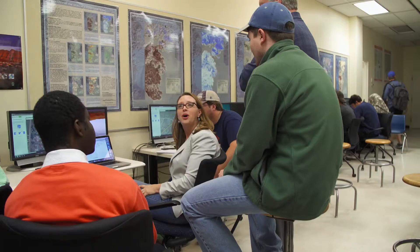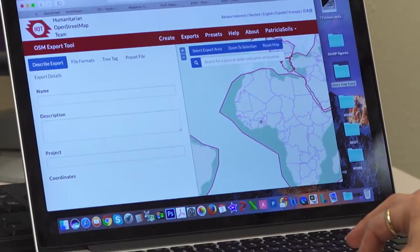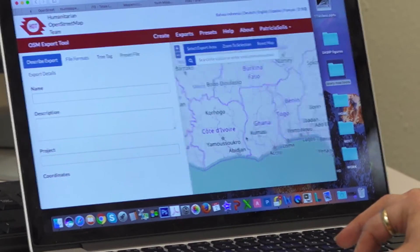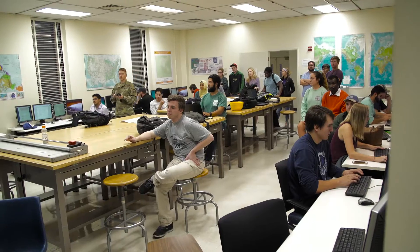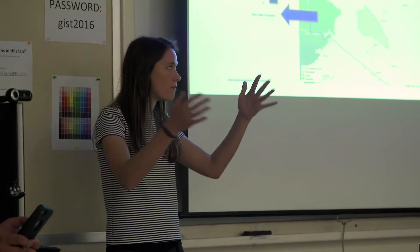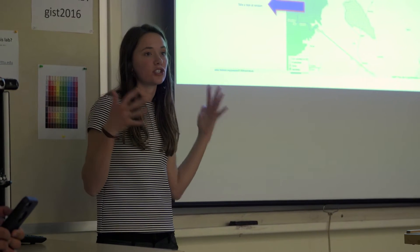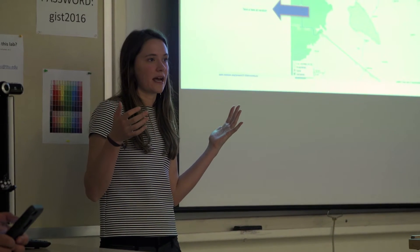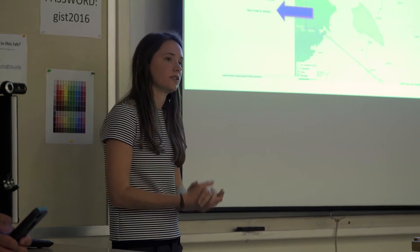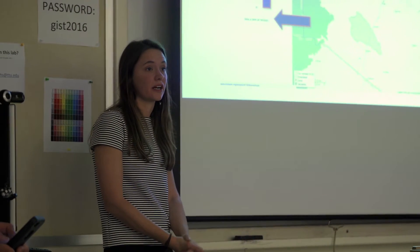Disasters happen all the time, and with this skill, the citizens, scientists can just respond at any moment. What you're seeing here is called a Mapathon, which is basically a mapping party, where we get together and try to create geospatial data for a particular cause or purpose. They'll be able to look at and come up with population data and be able to make decisions about spraying for malaria mosquitoes.